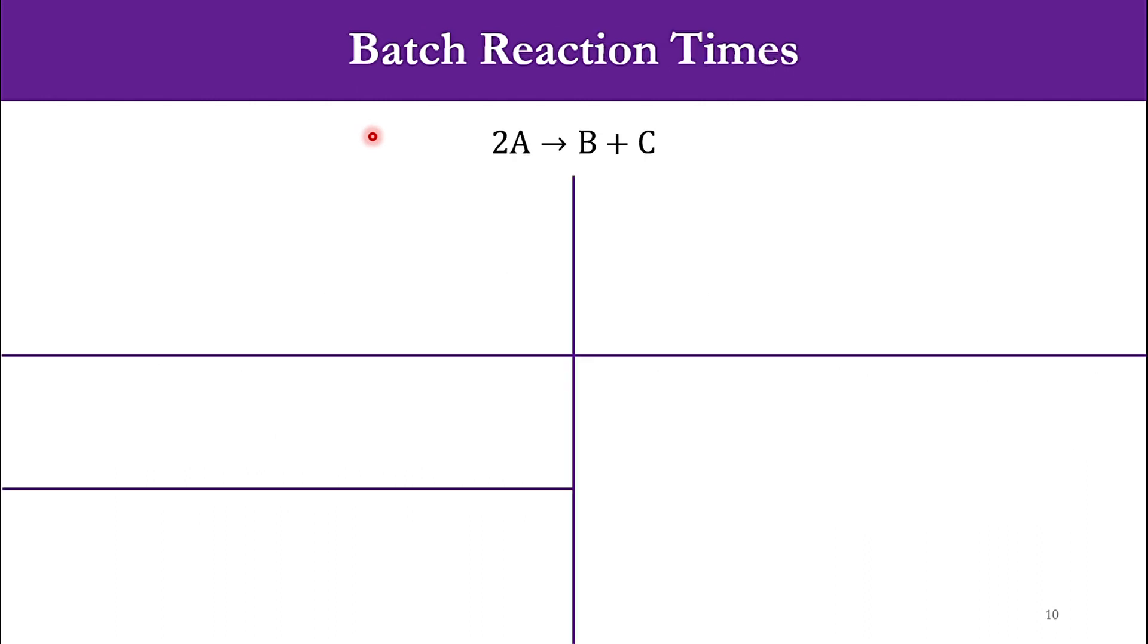Now we want to calculate the batch reaction time. The system we've been given is that 2 moles of A reacts to produce 1 mole of B and 1 mole of C. We'll go step by step. The first step is the mole balance. Since it is a batch reactor, NA0 dX/dt equals -RA times V0. Once we rearrange it, dX/dt equals -RA times V0 over NA0, and V0 over NA0 will be 1 over CA0.